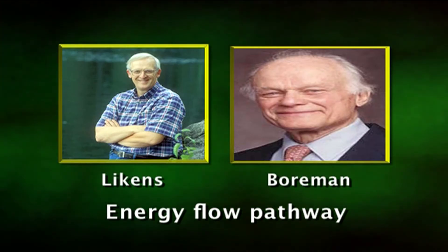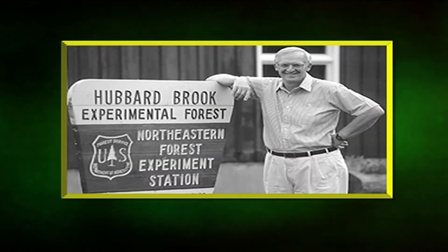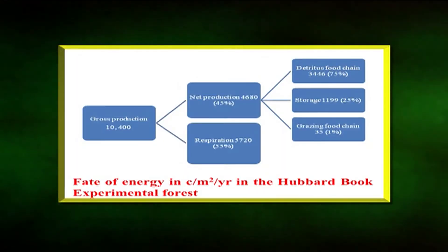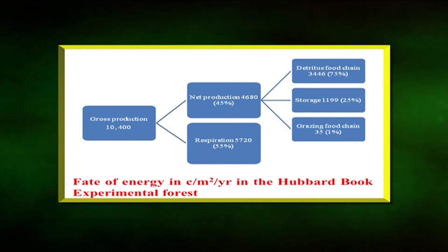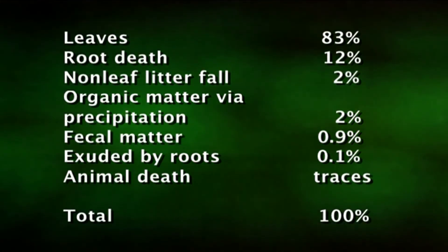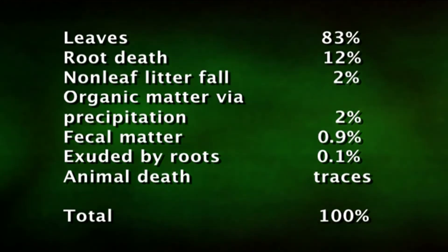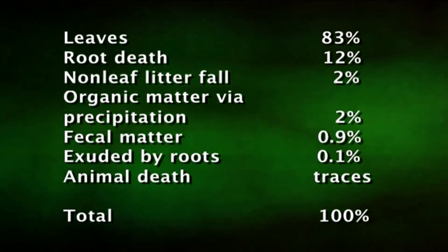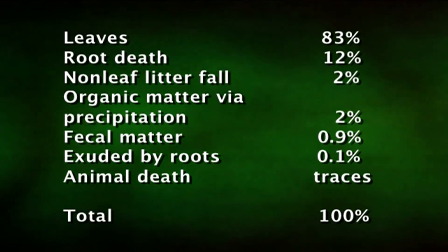Likens and Bormann studied the energy flow pathway in the Hubbard Brook Experimental Forest, a sugar maple, beech, and yellow birch forest in New Hampshire. A substantial portion of energy — 75 percent of net primary production — passes through the detritus food chain, and only 1 percent through the grazing food chain. The sources of all energy flowing through the detritus pathway are: leaves 83%, root death 12%, non-leaf litter fall 2%, organic matter via precipitation 2%, fecal matter 0.9%, exuded by roots 0.1%, and animal death traces.